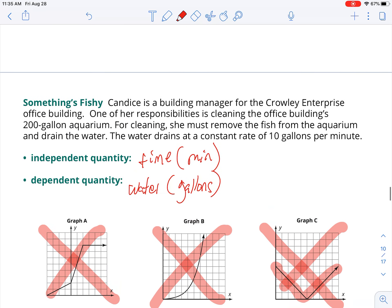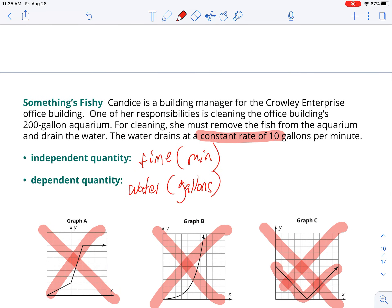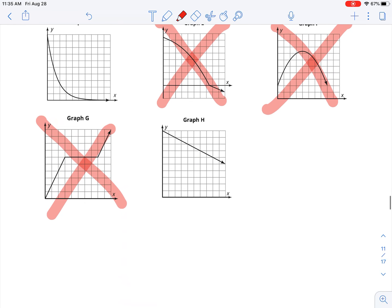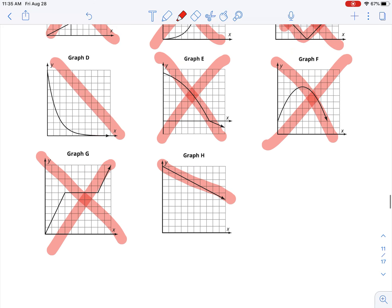The key word on this problem is constant rate. That's a straight line. Constant rate. So we are going to choose letter H. Once you've choose the graph, tape it in there, and let's label it out.